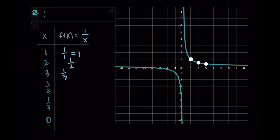We can also input smaller values like 1 half or 1 third. For 1 half, we have 1 divided by 1 half — multiplying by the reciprocal gives 1 times 2 over 1, which simplifies to 2. So this is the point (1 half, 2). For 1 third, we multiply by the reciprocal to get 3, giving the point (1 third, 3). If we made input values negative, the outputs would also be negative.